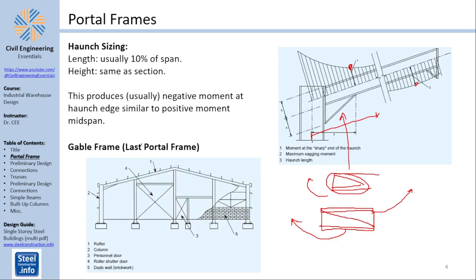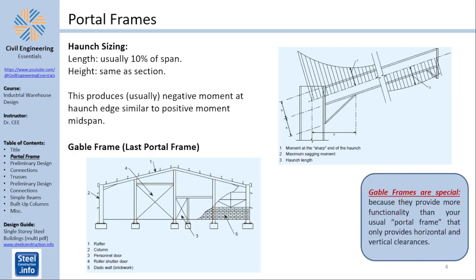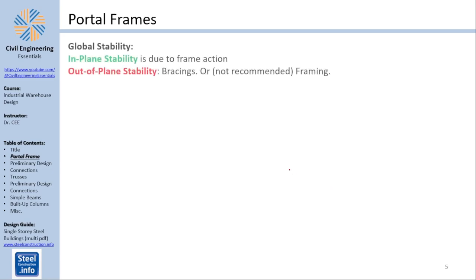Now, gable frames exist too. Those are basically portal frames, but special portal frames. The last portal frame in a warehouse is called the gable frame. The reason why this is called like that is because you have different requirements for gable frames. First of all, gable frames are covered by brick wall or cladding, and second of all, you need to apply little frames inside that frame to account for doors and any other access you need to provide. So it's kind of special. So basically, gable frames are special because they provide more functionality than your usual portal frame. All right, so with that being said, you need, of course, to stabilize your portal frame.